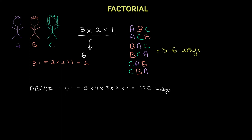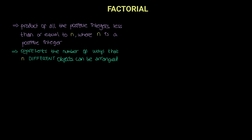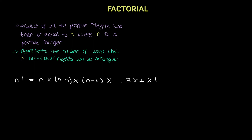Now let's look at the formal definition of a factorial. A factorial is the product of all positive integers less than or equal to n. So basically, as I'm writing over here, n factorial is a positive integer — it is the product of all the positive integers less than or equal to n, all the way down to one. This is the general representation of a factorial. Another definition for a factorial is that it represents the number of ways that n different objects can be arranged. It is very important to realize that the objects you are arranging need to all be different — they need to be distinct.